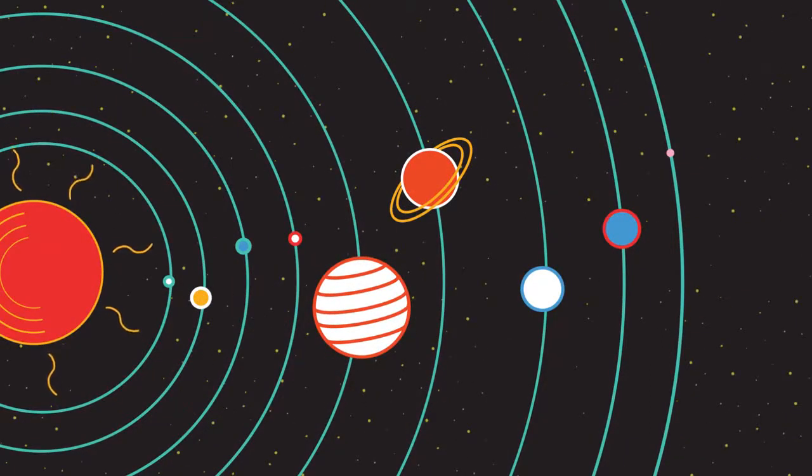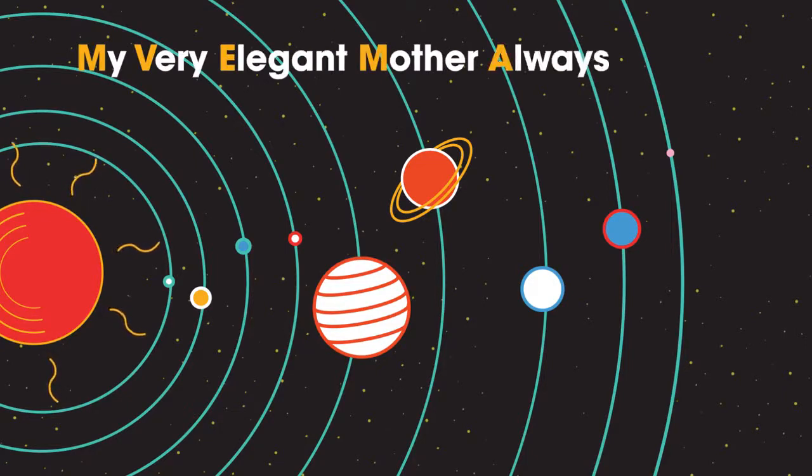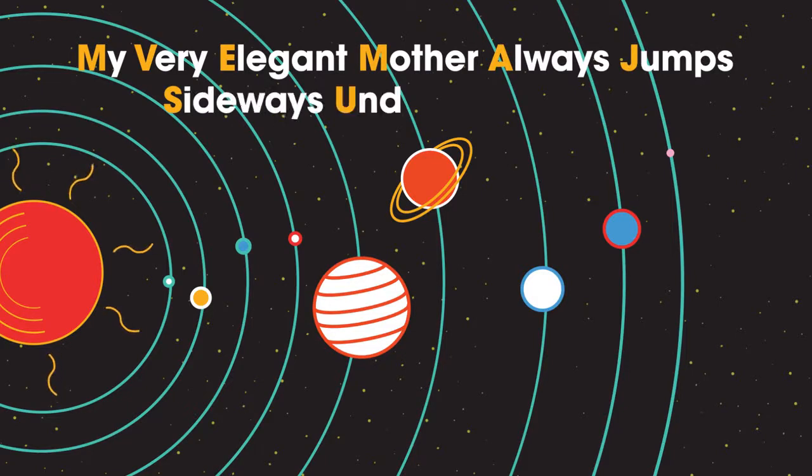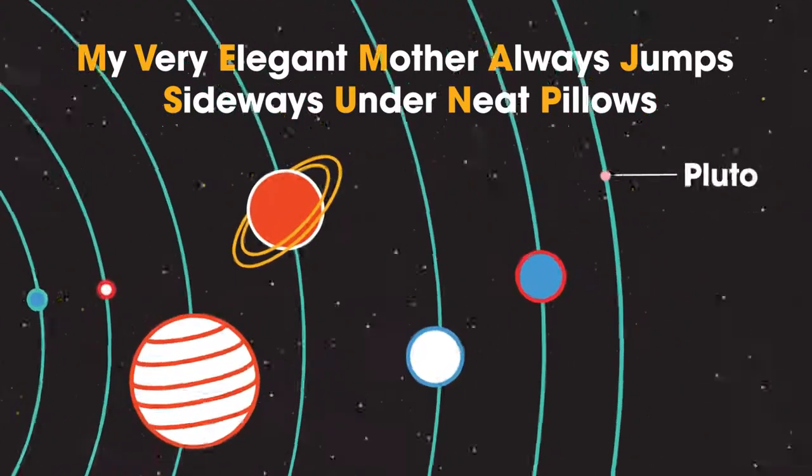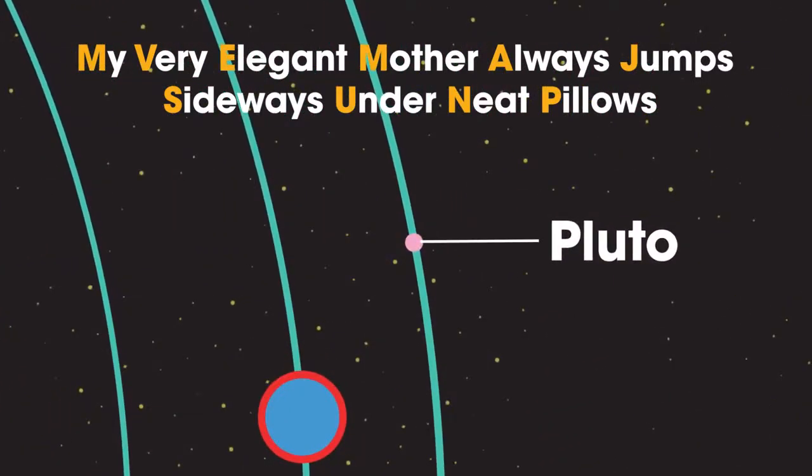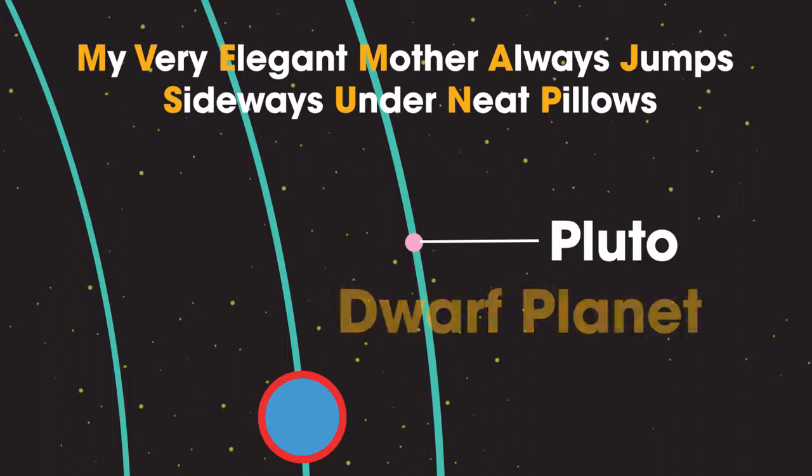Until 2006, a verse to recall the planetary order could have been: my very elegant mother always jumps sideways under neat pillows. In that year, it was decided that Pluto was not a true planet, and so was reclassified as a dwarf planet. Poor Pluto.